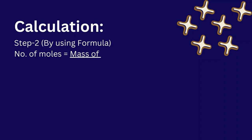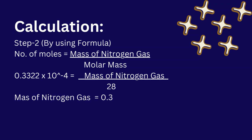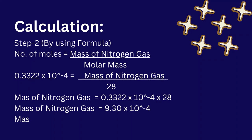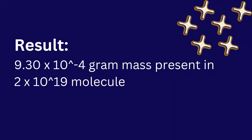Step 2: using the formula, 0.3322 into 10 to the power of minus 4 equals mass of nitrogen gas divided by 28. Therefore, mass of nitrogen gas equals 0.3322 times 10 to the minus 4 multiplied by 28. Result: mass equals 9.30 into 10 to the power of minus 4 grams, present in 2 into 10 to the power of 19 molecules of nitrogen gas.